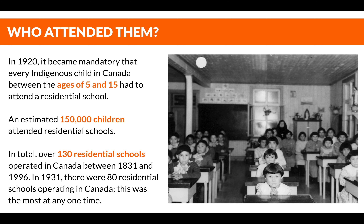In 1920, it became mandatory that every Indigenous child in Canada between the ages of 5 and 15 had to attend a residential school. An estimated 150,000 children attended residential schools in total, over 130 residential schools operated in Canada between 1831 and 1996. In 1931, there were 80 residential schools operating in Canada — the most at any one time.